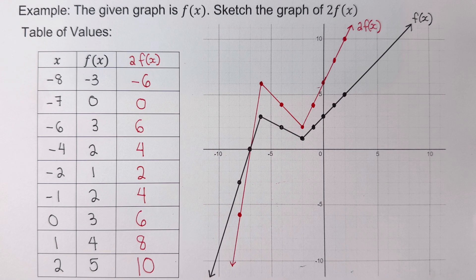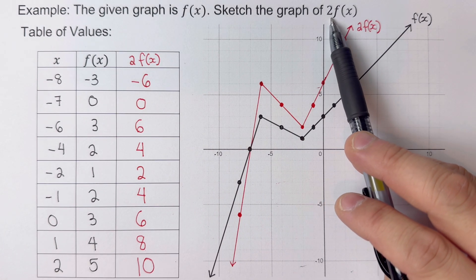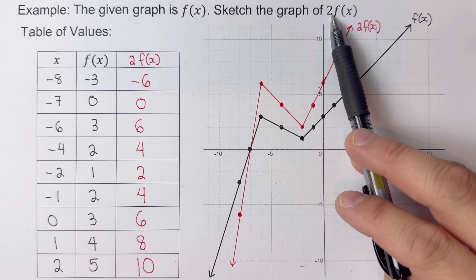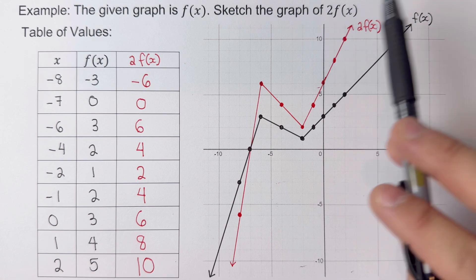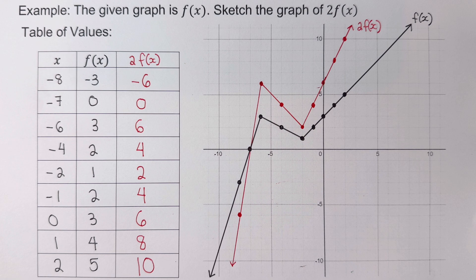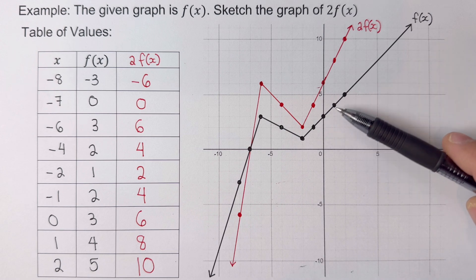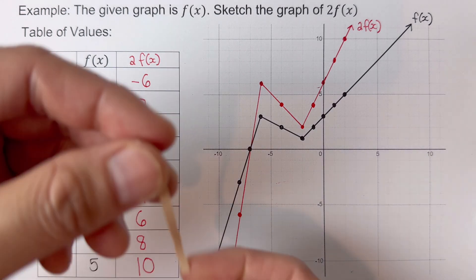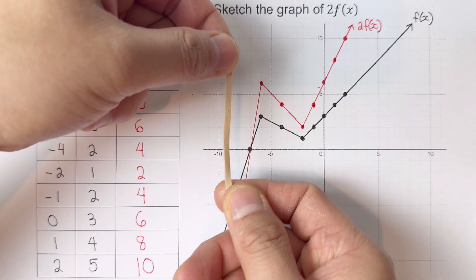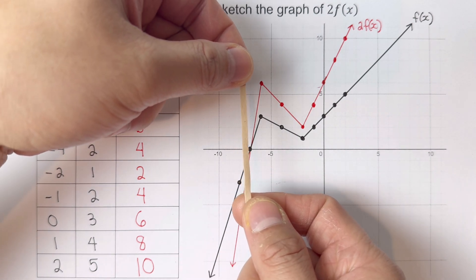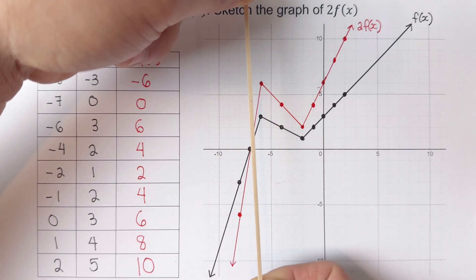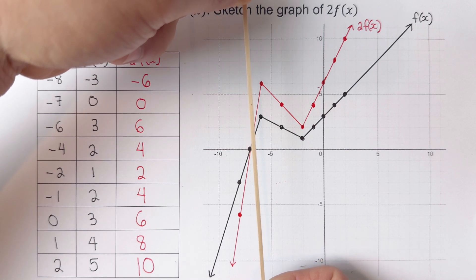If you notice, the coefficient 2 corresponds to parameter a. Parameter a vertically stretches or compresses the graph. In this case, the graph was vertically stretched. Just imagine the original function as a rubber band that was vertically stretched. That's why the red graph looks skinnier compared to the original graph.